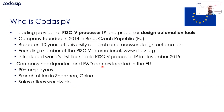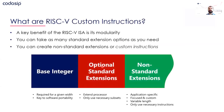Our headquarters and R&D centers are located in Europe — in the Czech Republic, Germany, France, and others — and we also have presence around the world, including China and North America. If we talk about extensions in general, let me briefly introduce how the RISC-V ISA is designed.